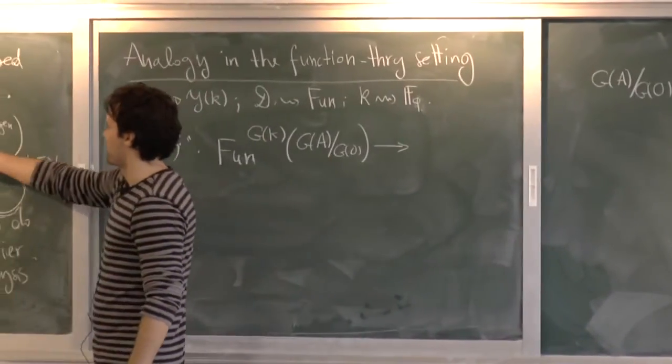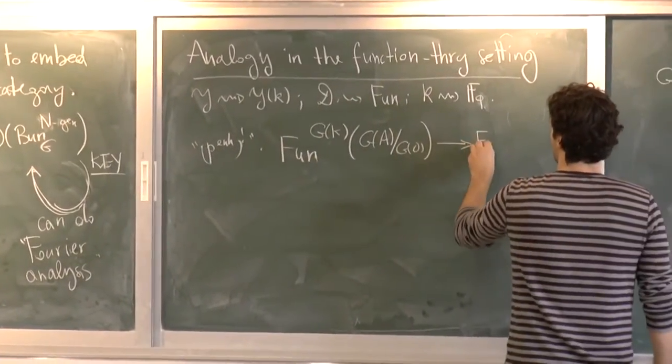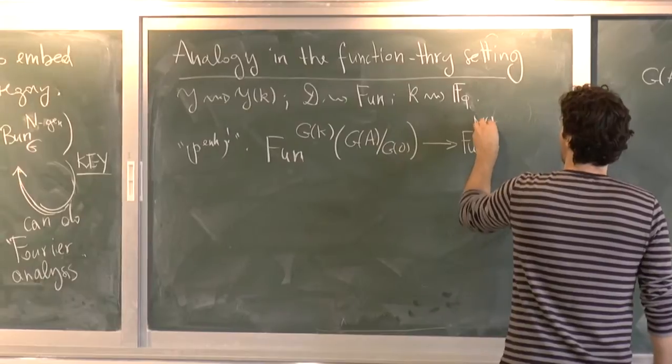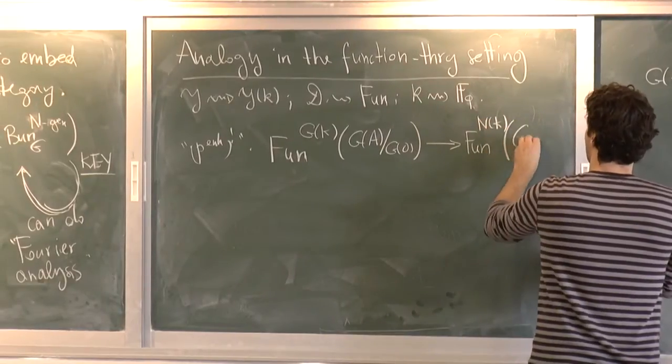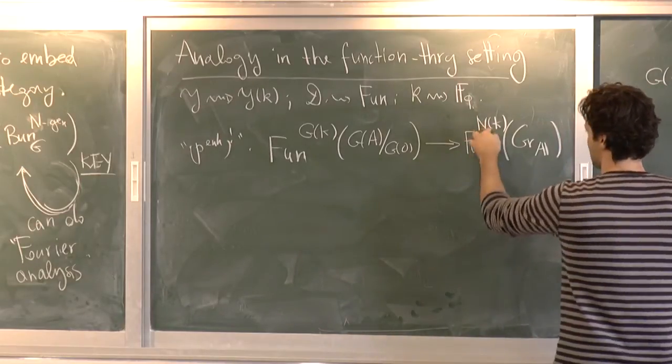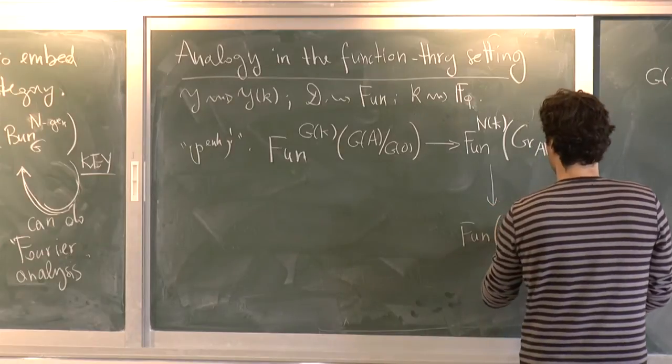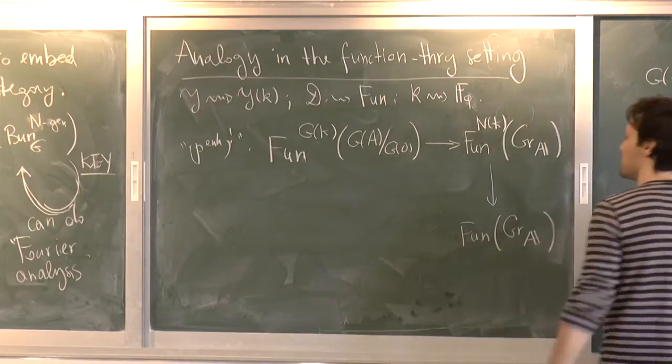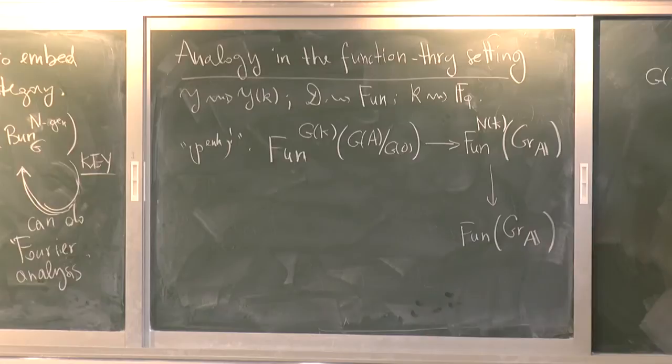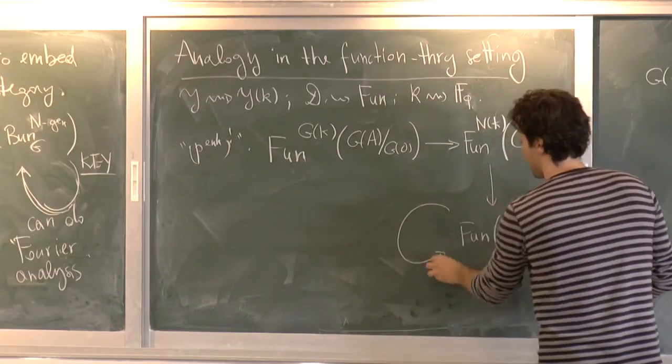And so this functor was just, in this setting, was just forget that you were G of K invariant, and just retain the N of K invariant on the Grassmannian. And then we can further forget this whole N of K invariant to just go to functions on G of A modulo.